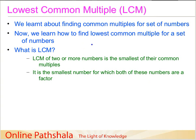In today's session we will continue our discussion on the chapter on playing with numbers, and today we will be discussing about the Lowest Common Multiple, also called in short as the LCM. Basically what we have done earlier is we learnt how to find the common multiples for a set of numbers. Common multiples are the multiples which occur for a set of numbers that are common to that set. Now we will learn how to find the lowest of the common multiples — the LCM of two or more numbers is the smallest of their common multiples.